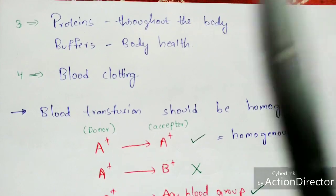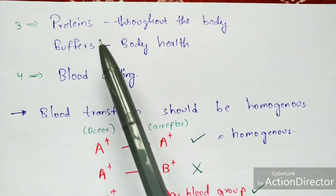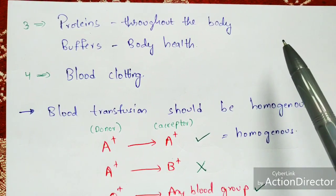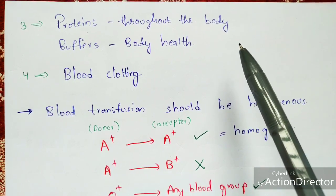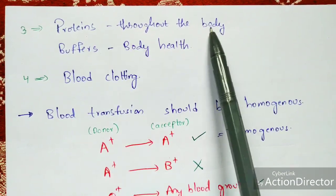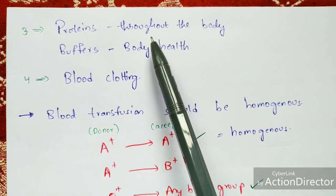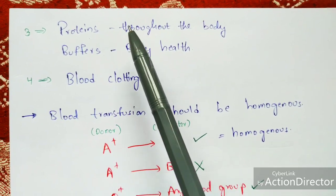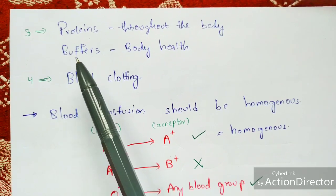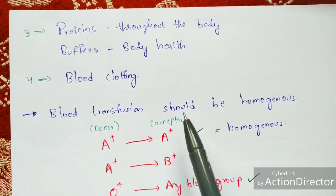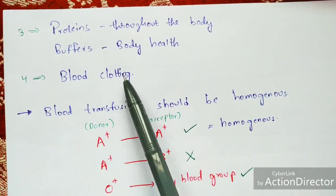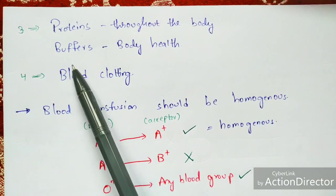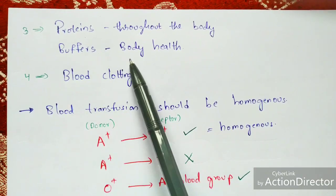Plasma is the liquid part of the blood that carries cells and proteins throughout all body parts. For example, when you consume calcium-rich food, the calcium nutrient is absorbed from the microvilli of the digestive system, and then the plasma cells in the blood transport those calcium ions to the bones as blood passes throughout the body. Plasma also acts as a buffer, maintaining overall body health.